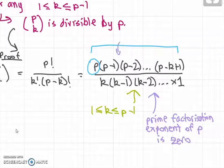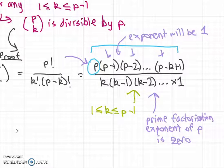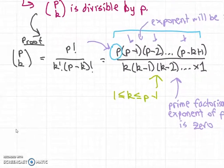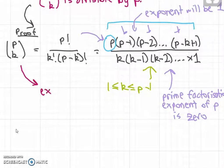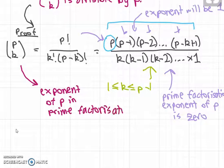So if you do the prime factorization of the denominator, the exponent of p is zero. But in the numerator, the exponent will be one, because of the number p here—all these other numbers are less than p so they don't contribute to the exponent. This means the overall number p choose k